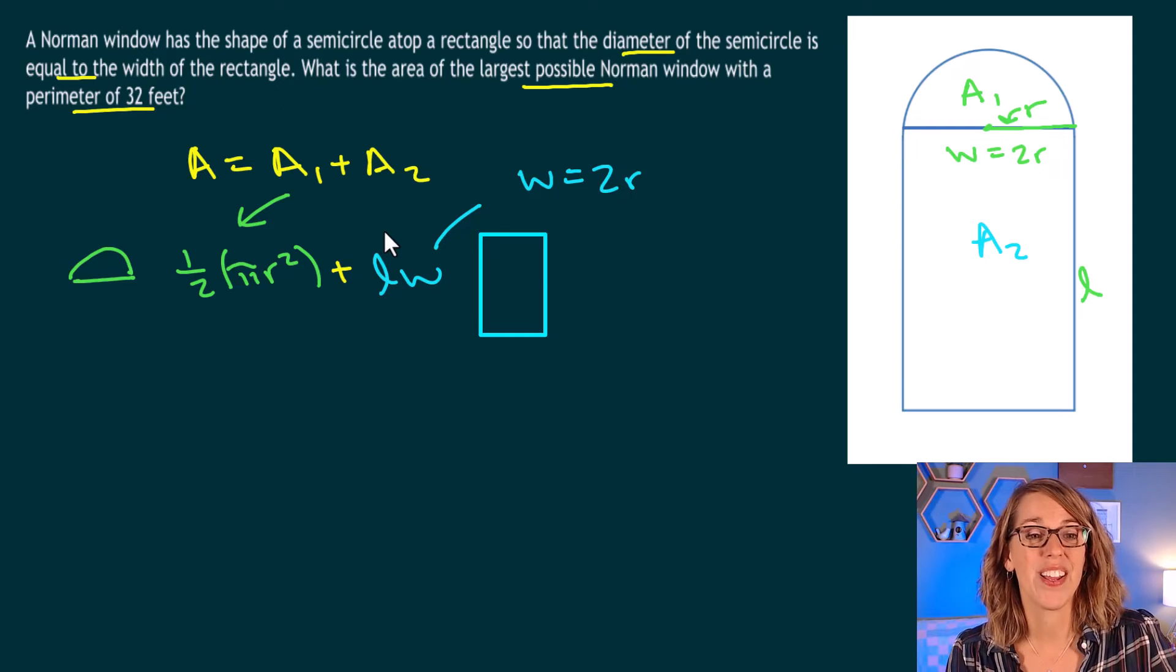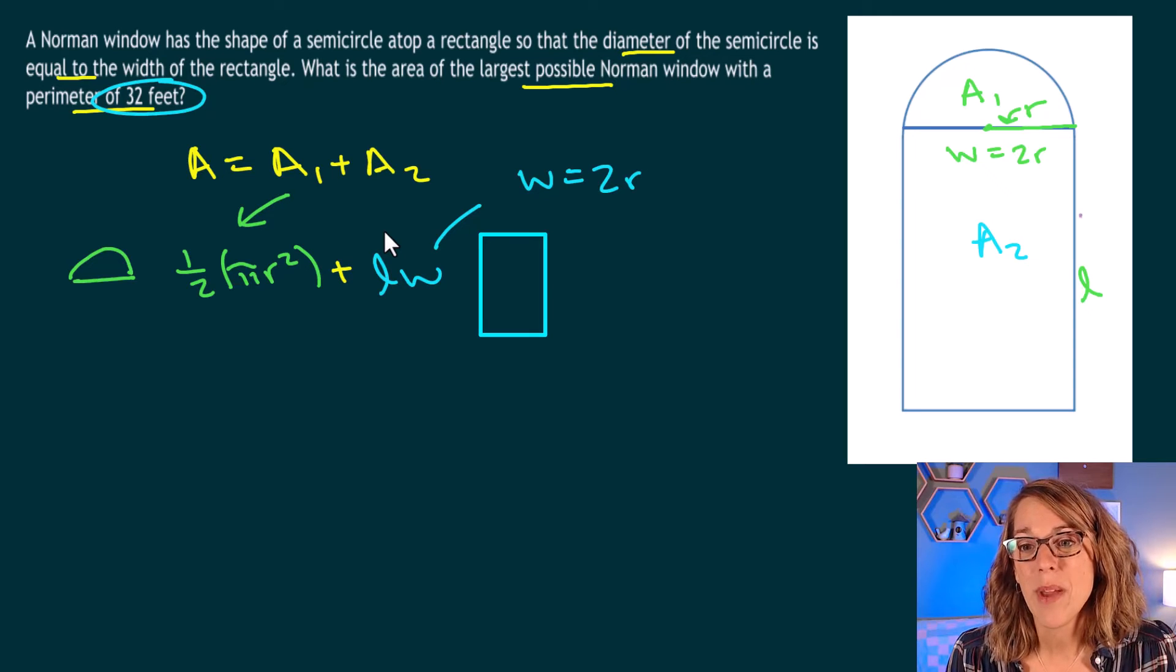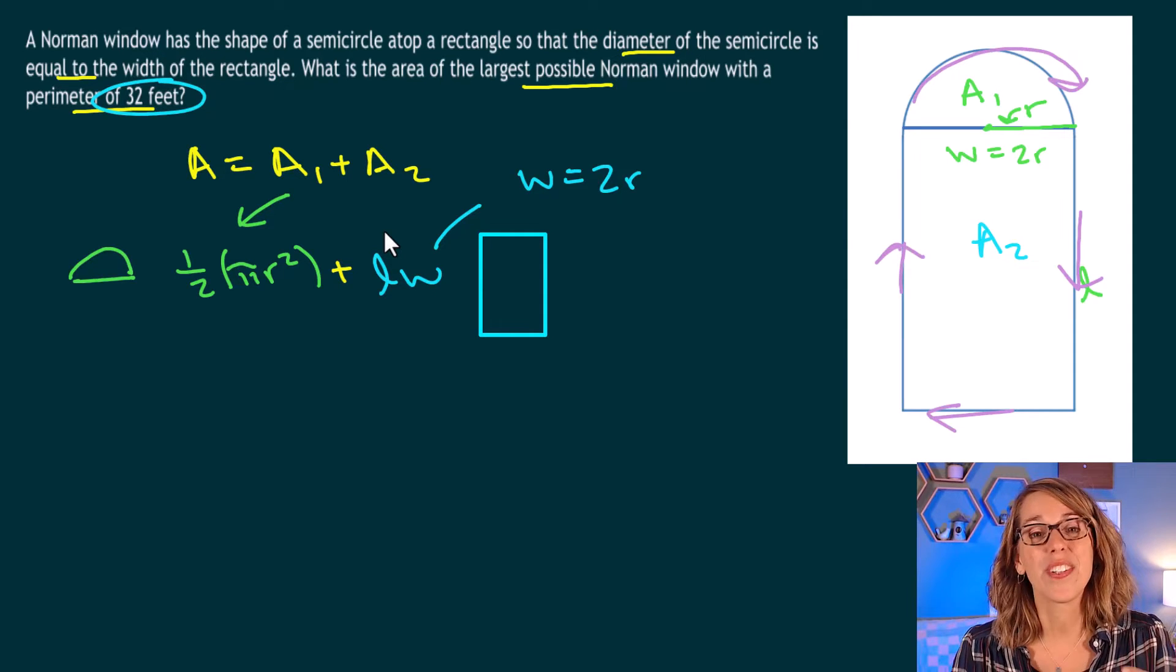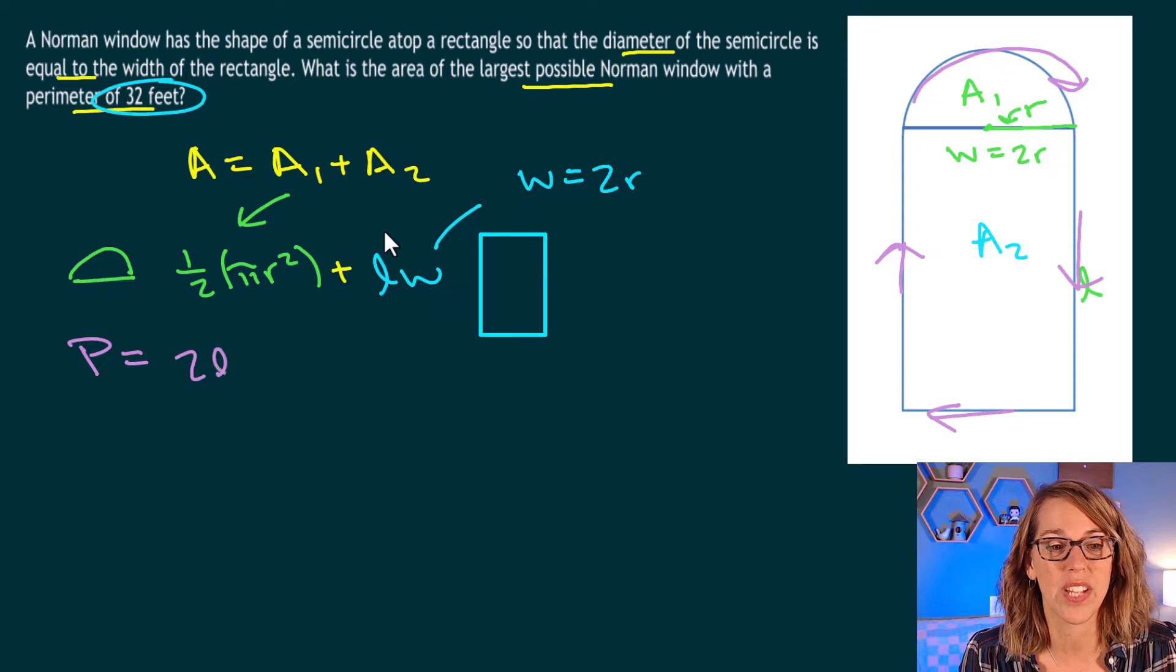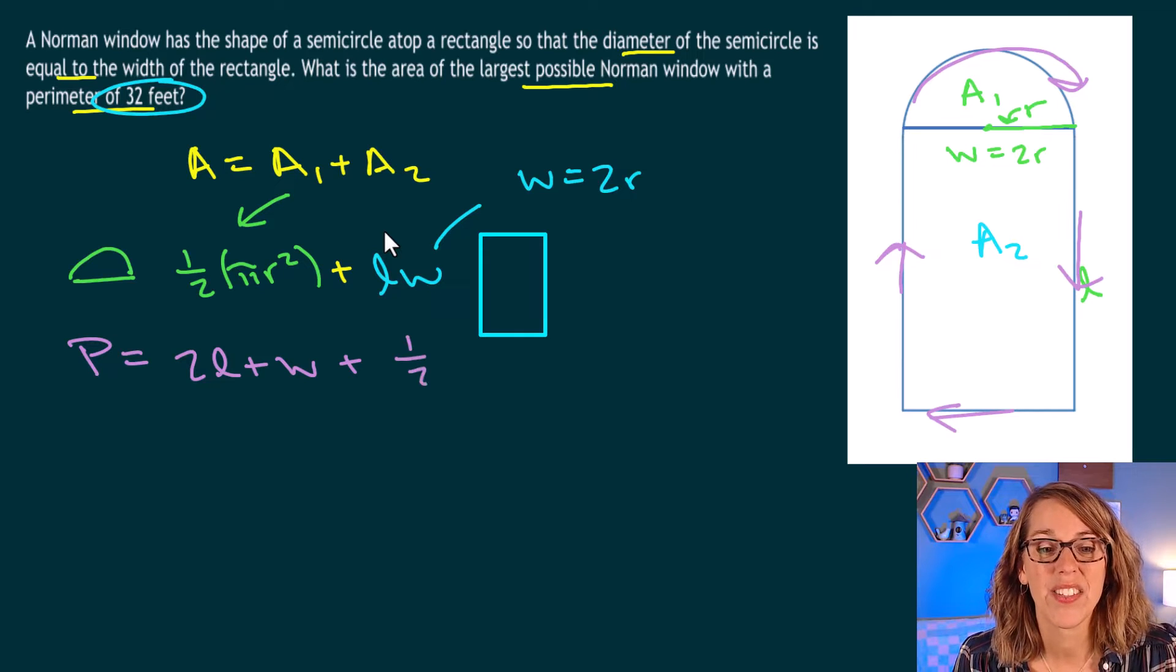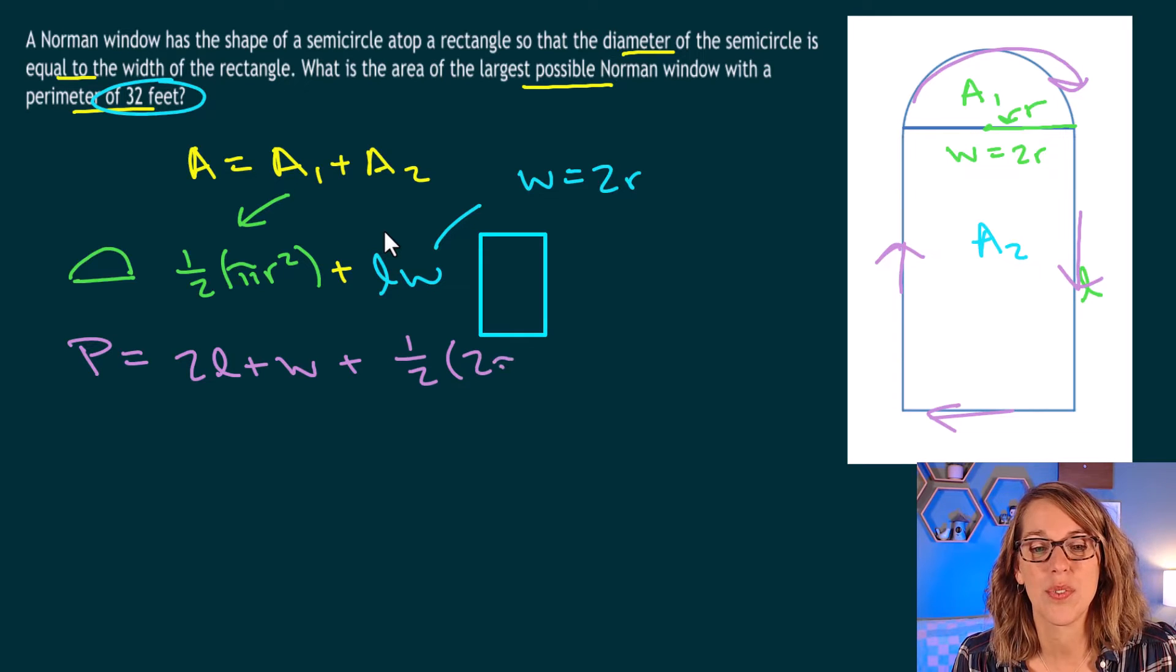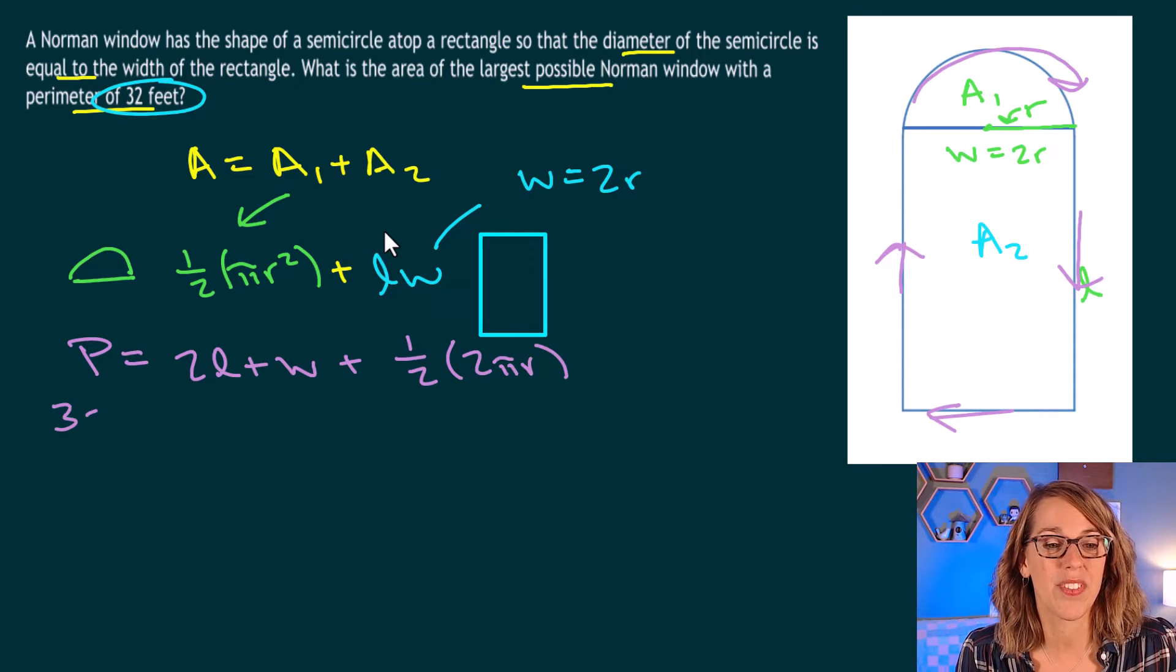So starting with that w, I know that w is equal to 2r, and I can also get to l in terms of r using the only thing I haven't used yet, and that's the perimeter. To get the perimeter, I need to go all the way around the three sides of my window and around the semicircle. So I know that my perimeter is equal to two lengths and one width. So two lengths plus one width plus half of the circumference of a circle. The circumference of a circle is 2 pi r.